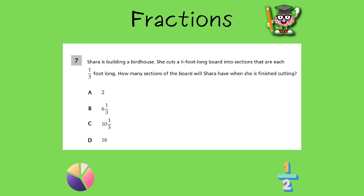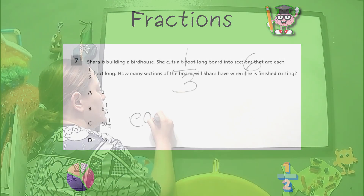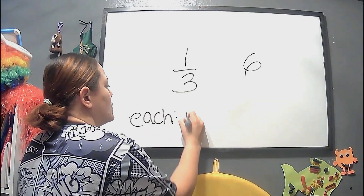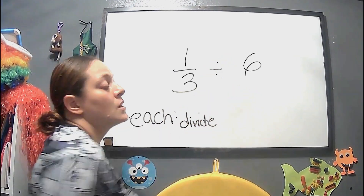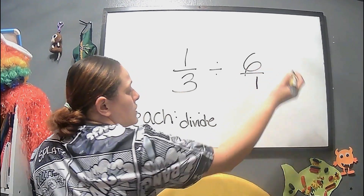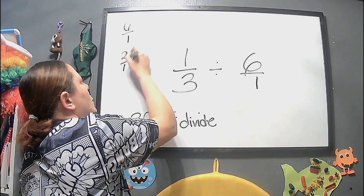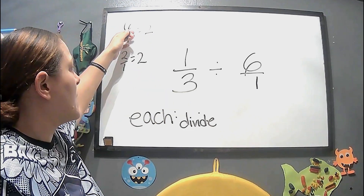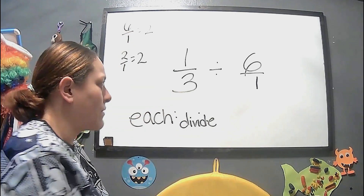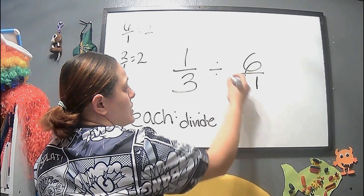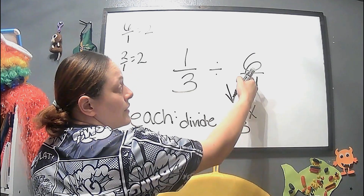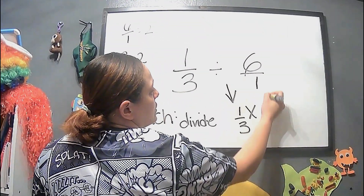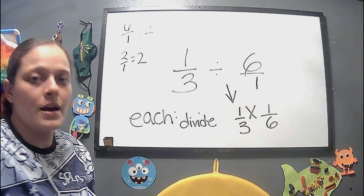These two numbers are from a word problem: 1 third and 6. The word that stuck out is 'each,' and 'each' usually tells us to divide. To divide a whole number by a fraction, we put 6 over 1. Then we change the division to multiplication and flip 1 third's reciprocal — 1 over 3 becomes... wait, we flip 6 over 1 to get 1 over 6, and multiply 1 third times 1 over 6.